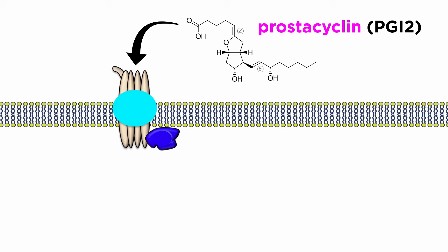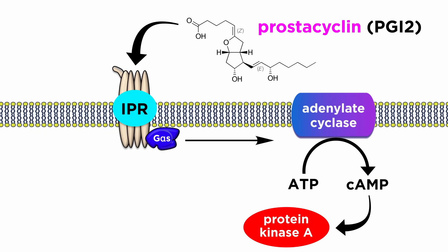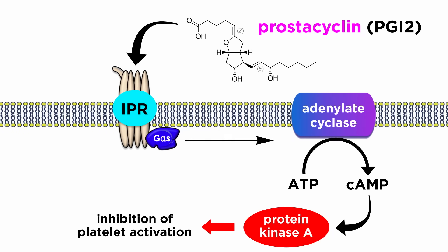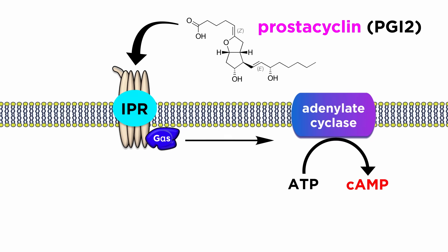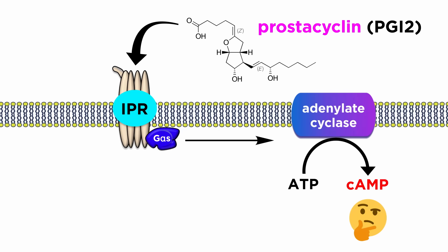Prostacyclin, the other endogenous platelet inhibitor we mentioned, activates the G-protein coupled receptor known as the prostaglandin I2 receptor, usually called the IPR. This receptor couples to Gα-S, and as we learned in previous tutorials, activation of this G-protein pathway increases the intracellular concentration of cAMP by increasing the activity of adenylate cyclase, which increases the conversion of ATP to cAMP. cAMP activates protein kinase A, which has many similar phosphorylation targets as PKG concerned with inhibiting platelet activation. A key indicator of platelet reactivity is the intracellular concentration of cAMP: higher cAMP concentrations reduce platelet activity, and lower cAMP concentrations increase platelet activation.